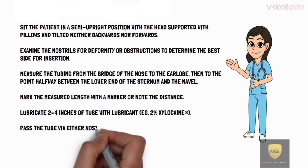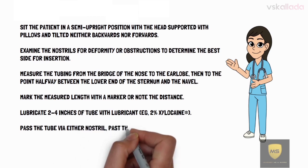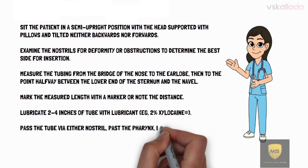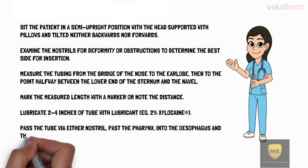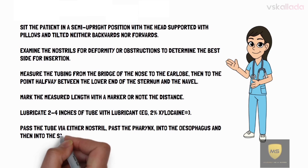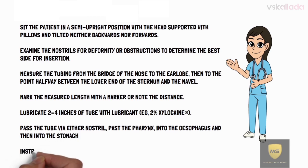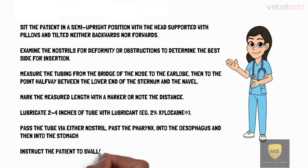Pass the tube via the nostril, through the pharynx and esophagus, and then into the stomach. Instruct the patient to swallow if the patient is conscious.